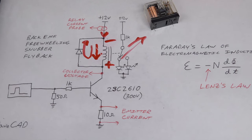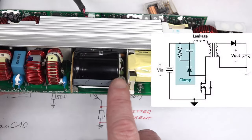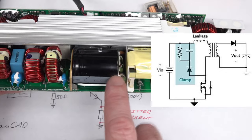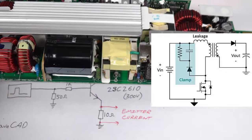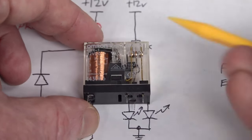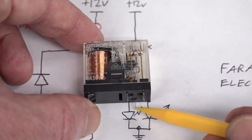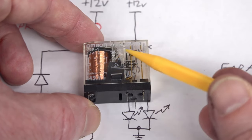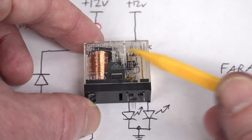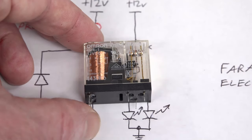The back EMF diode will conduct all that current and stop the voltage rising, absorbing the energy stored in the coil very quickly so it doesn't damage your circuits. The term 'flyback' actually comes from the primary side of switching power supplies. Inside a relay you can see the coil of wire and contacts — activating the relay just pulls the armature across and moves the contact from one side to the other.